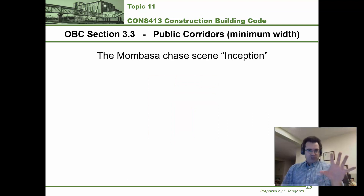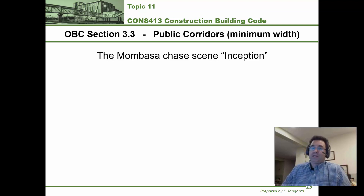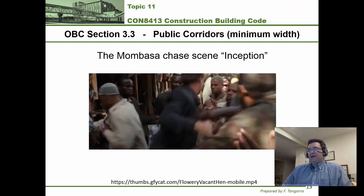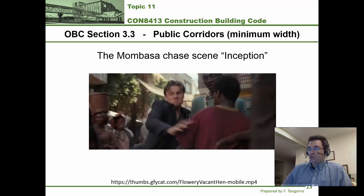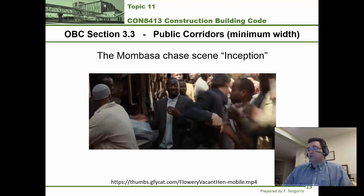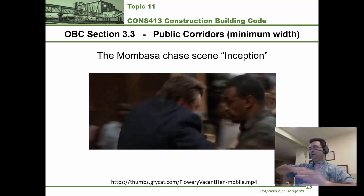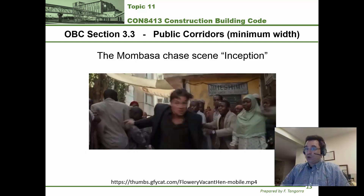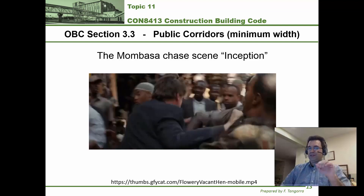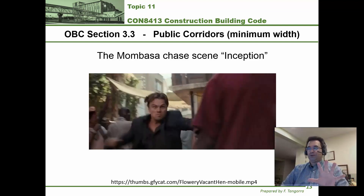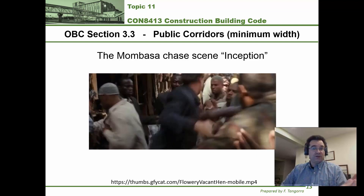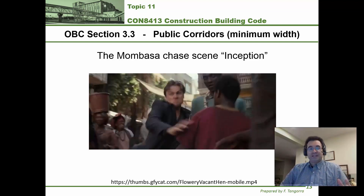Picture this: the protagonist is running away from a number of bad people. As he's doing so, he's making his way through a very busy street. There are so many people that the protagonist actually has to move people out of the way, elbowing them — making his way through too many people, not doing so in a very efficient fashion. But suddenly,